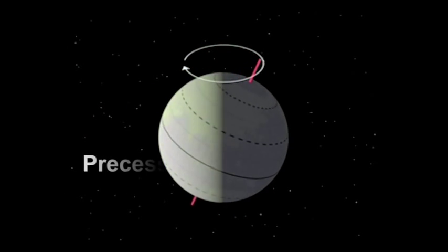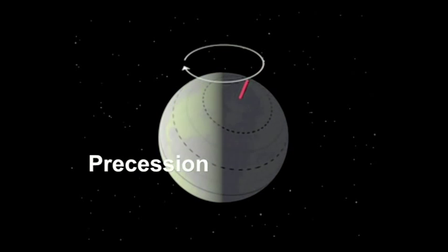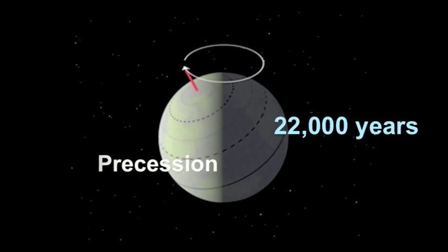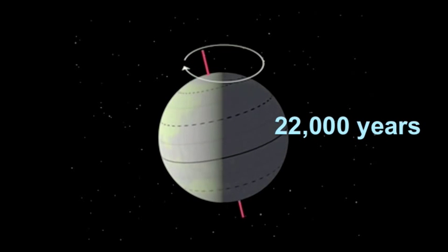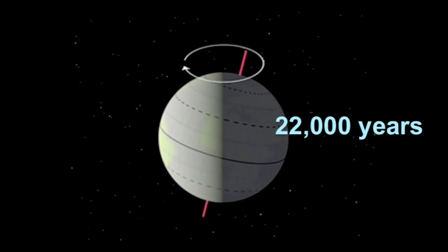The first one is precession. This refers to the slow change in the direction of Earth's axis of rotation, much like a rotating top. The process takes about 22,000 years.